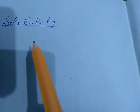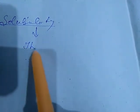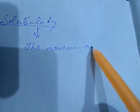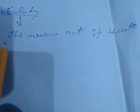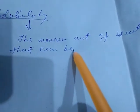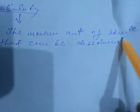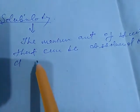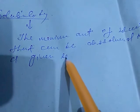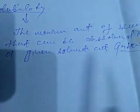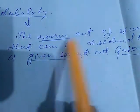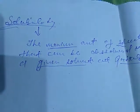Because solubility will vary, we can define solubility as the maximum amount of solute that can be dissolved in a given solvent at a particular temperature. At a particular temperature, the maximum amount of solute that dissolves is called solubility.